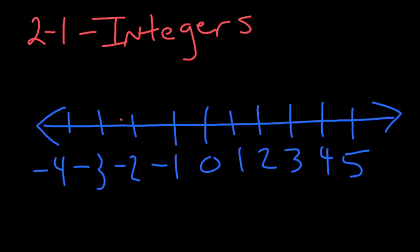2-1 Integers. Integers are positive and negative whole numbers. When you look at this number line, 1, 2, 3, 4, 5, everything headed that way is a positive integer. It's a positive whole number.